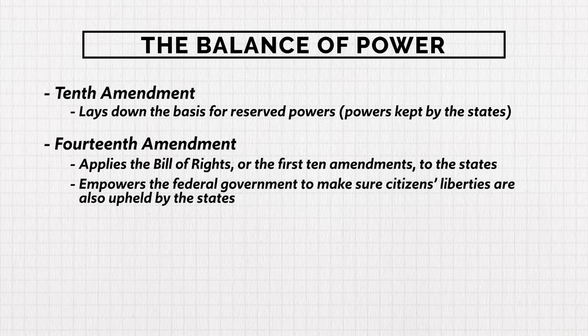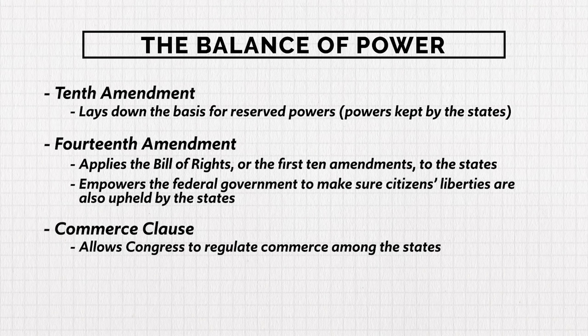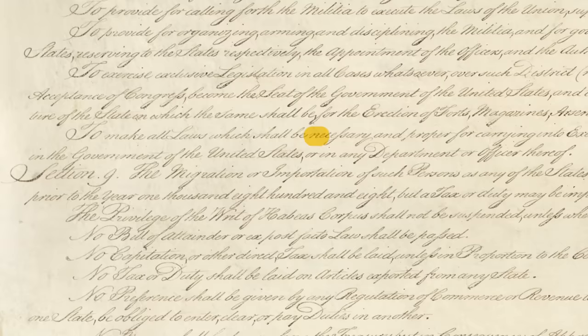Third is the Commerce Clause, which allows Congress to regulate commerce among the states — widely used by Congress to bring states into submission to its will. Fourth is the Necessary and Proper Clause, also known as the Elastic Clause. The exclusive powers of Congress are explicitly outlined in Article 1, Section 8, but it ends by saying Congress can make any other law that is necessary and proper to upholding those listed powers. This is how Alexander Hamilton justified the need for a national bank — Article 1, Section 8 says nothing about Congress having the power to establish a bank, but Hamilton argued it was necessary and proper since Congress has the power to regulate interstate commerce and raise taxes.